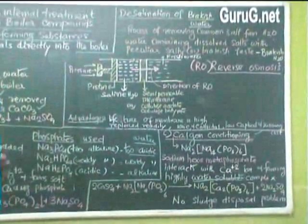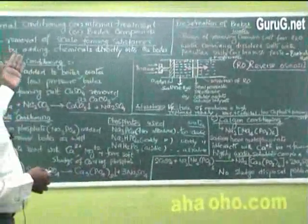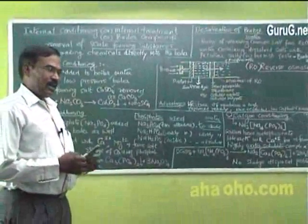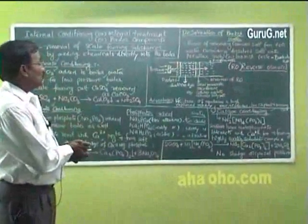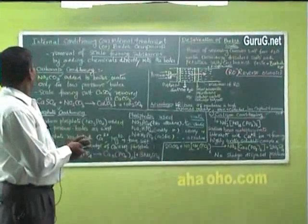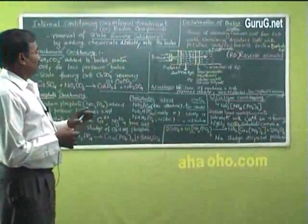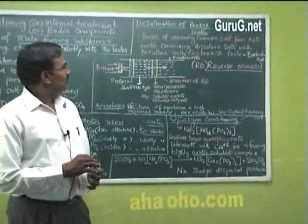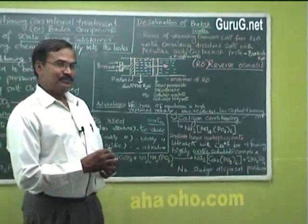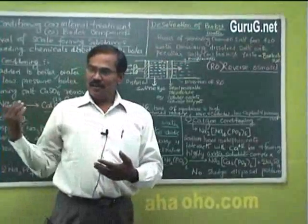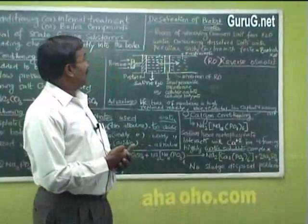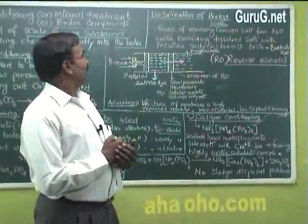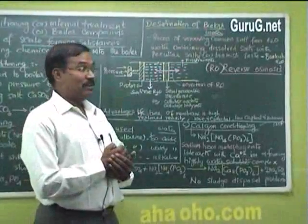So these are the three methods we have under internal conditioning. According to the nature of the water and according to our requirements, we can prefer any one of these three internal conditioning methods for boiler water. We have seen many methods for the purification of water, like ion exchange resin, internal conditioning, and external conditioning. Here we have another method for getting pure water.